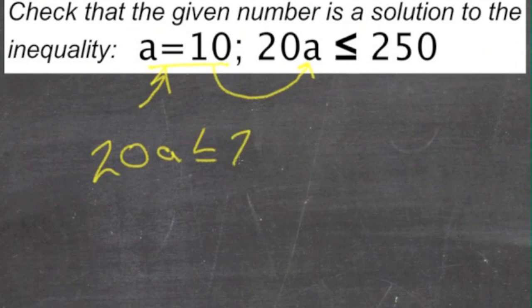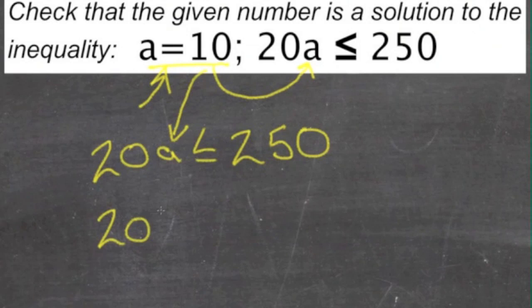We substitute in that 10 in place of the a, and we'll get 20 times 10 is less than or equal to 250.